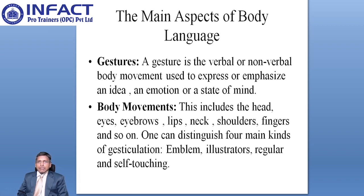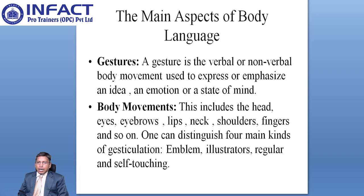Different types of gestures exist, and body movements used to express emphasis, ideas, or emotions can convey the state of mind of a person. Body movements include the head, eyebrows, eyes, lips, neck, shoulders, fingers, and so on. One can distinguish four main kinds of gesticulation: emblems, illustrators, regulators, and self-touching. All facial expressions on the human face convey facially expressive messages.